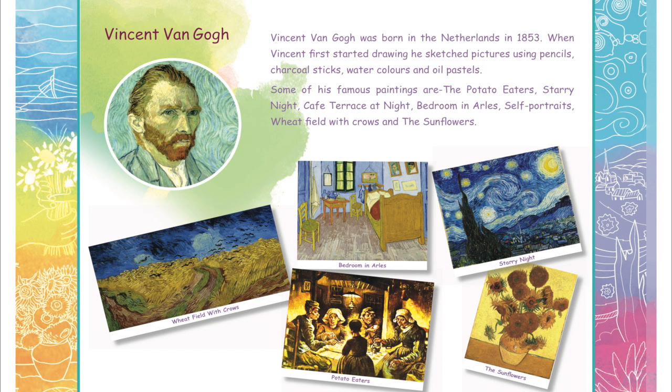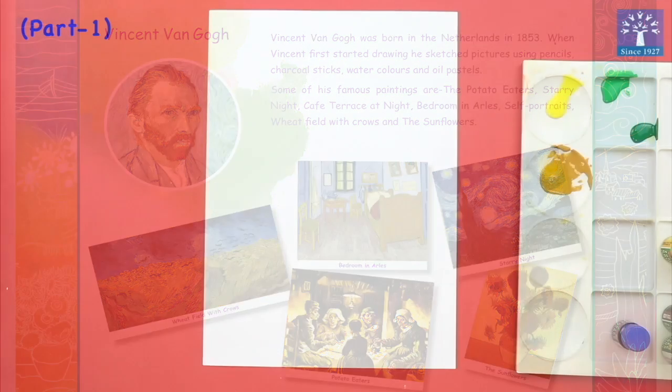Some of his famous paintings are The Potato Eaters, Starry Night, Cafe Terrace at Night, Bedroom in Arles, Self Portraits, Wheat Field with Crows and the famous Sunflowers.